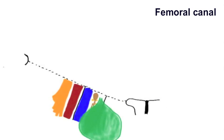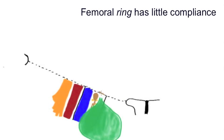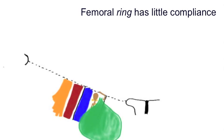It is in this femoral canal where femoral hernias are found. This whole area is very non-compliant, and that is why the neck of a femoral hernia can very easily become pinched, causing strangulation and/or obstruction.